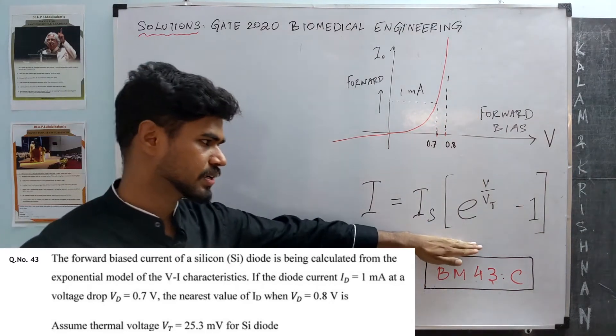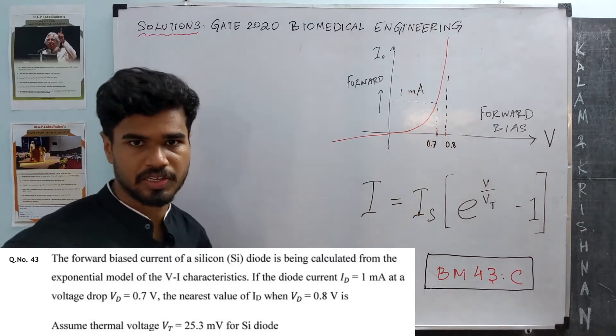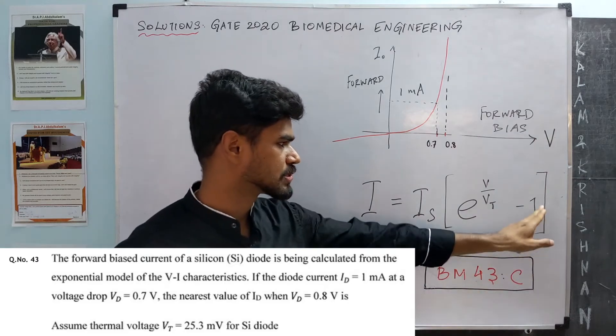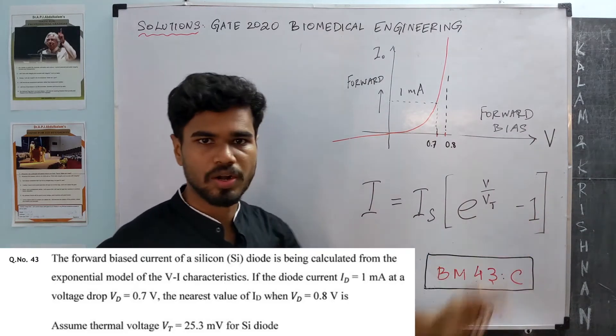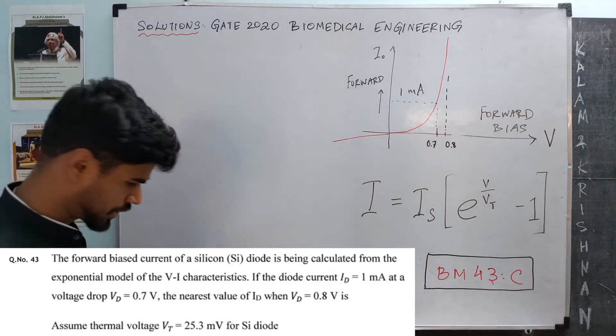Just use this relation and find the current. While doing that, it helps to make an approximation here, which is this exponential term is usually very big compared to 1, so we can neglect the 1.